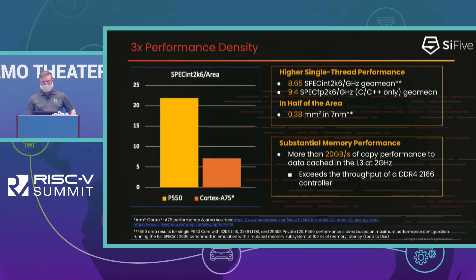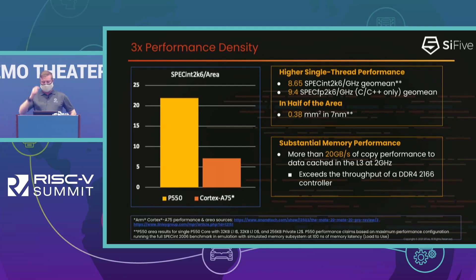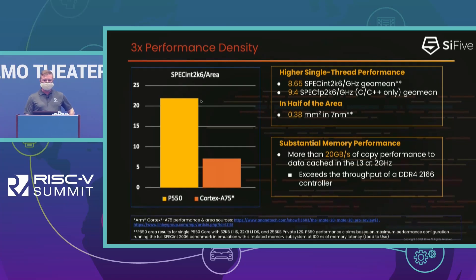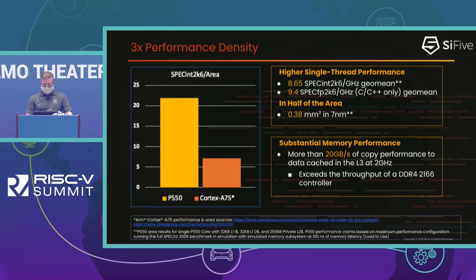When doing competitive comparisons of the P550 against available Arm cores, we were originally shooting for performance parity with the A72, but through more optimization we were able to beat even our own internal targets and compare favorably against the Cortex-A75. The really interesting point is that when you look at SPECint 2K6 per gigahertz per millimeter squared, we're coming up at about three times the performance density. Given our pretty aggressive load store unit where we can reorder all loads and stores with each other, we're able to get very substantial memory copy performance.